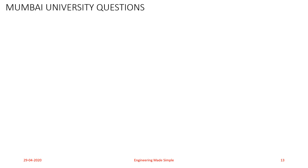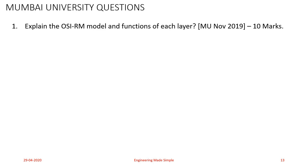I will now list a few Mumbai University questions asked in the examinations. First: explain the OSI reference model and functions of each layer — asked in Mumbai University 2019 for 10 marks.